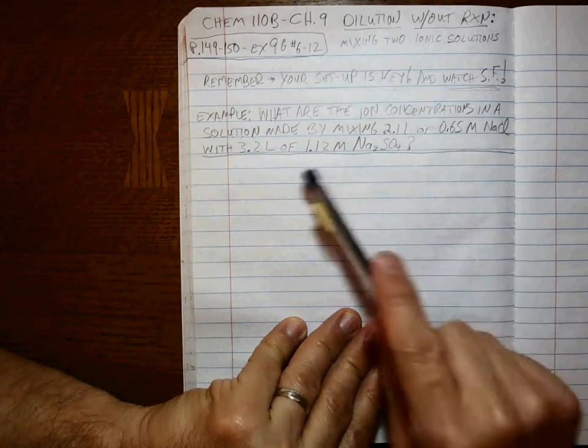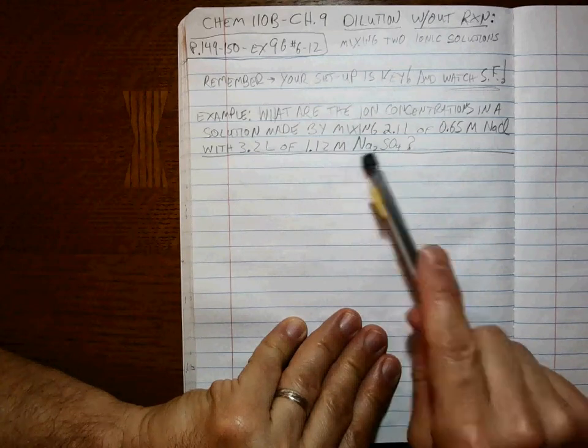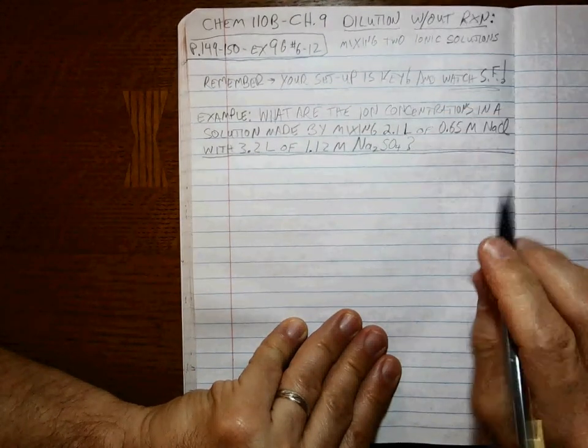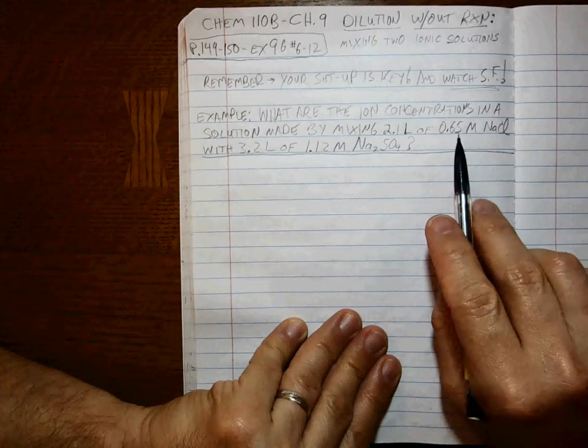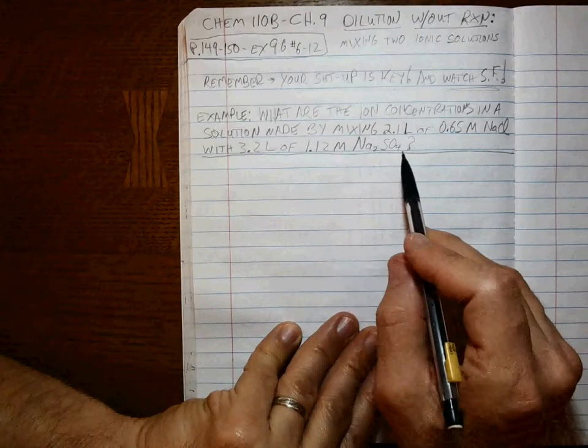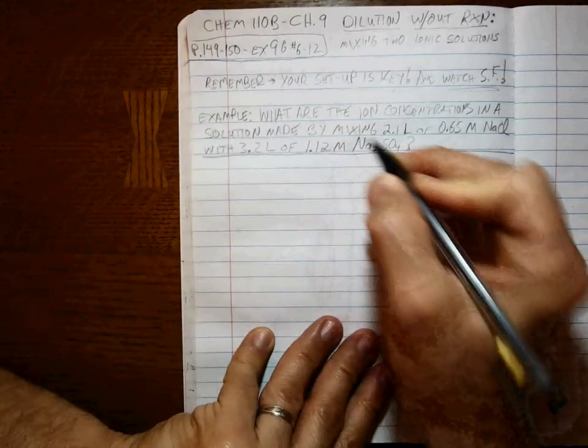Here's our problem. What are the iron concentrations in a solution made by mixing 2.1 liters of 0.65 molar sodium chloride with 3.2 liters of 1.12 molar sodium sulfate? That's a two.